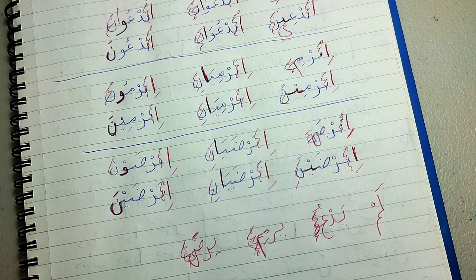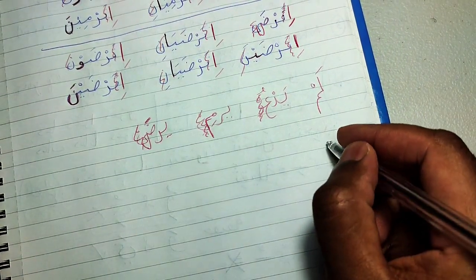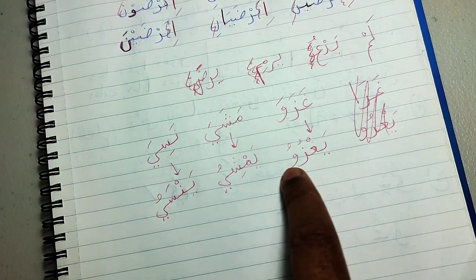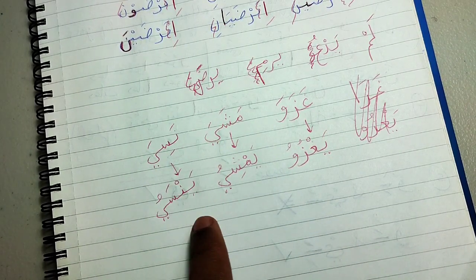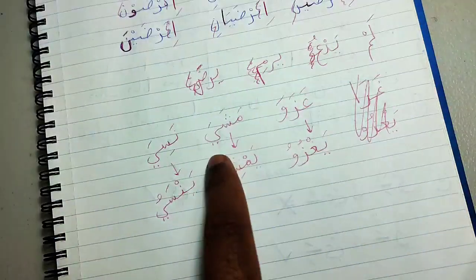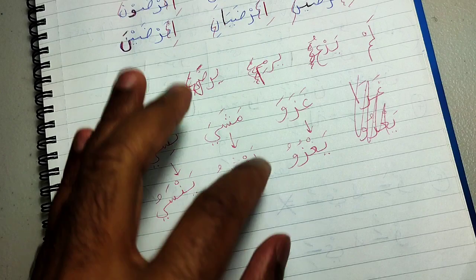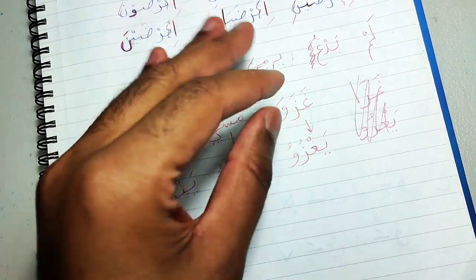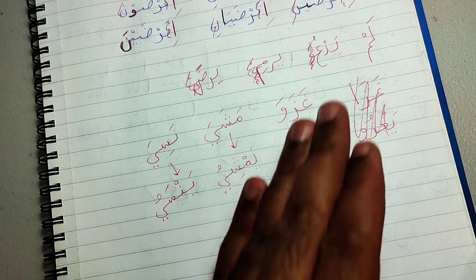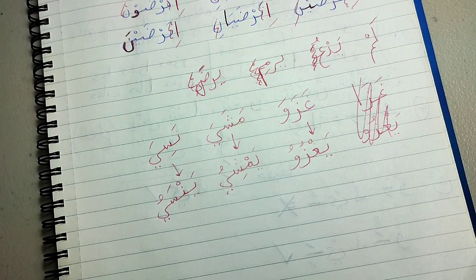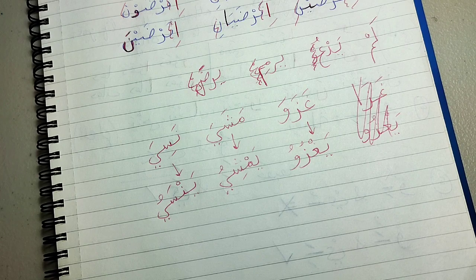Homework: do the tasrif (ماضي, مضارع, and أمر) for these three verbs: غزا/يغزو (فعَل/يفعُل — to invade), مشى/يمشي (فعَل/يفعِل — to walk), نسي/ينسى (فعَل/يفعَل — to forget). The origin forms are given; you need to apply all the changes we covered. We will go over these next lesson. Barakallahu fikum. سبحانك اللهم وبحمدك أشهد أن لا إله إلا أنت أستغفرك وأتوب إليك.